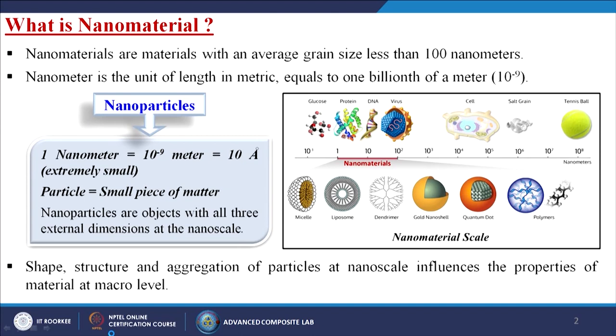What are nanoparticles? 1 nanometer equals 10 to the power minus 9 meters, which is equal to 10 angstroms. It is extremely small — we cannot see it with our naked eyes. A particle is a small piece of matter. Nanoparticles are objects with all three external dimensions at the nanoscale. There are different classifications: 0D, 1D, 2D, and 3D, which will be covered in the next slides.